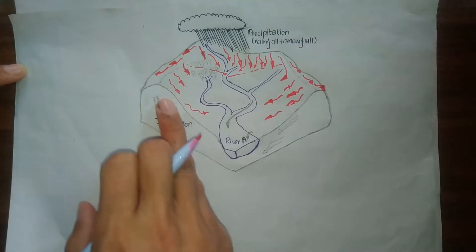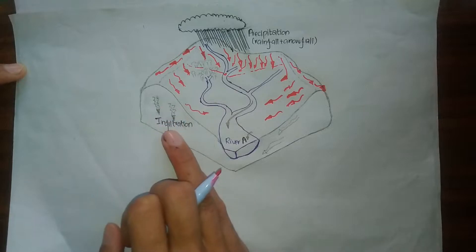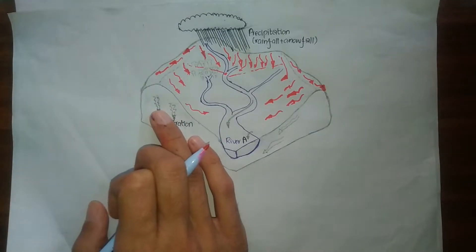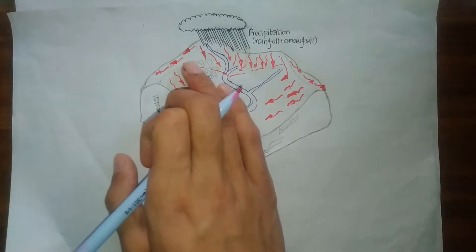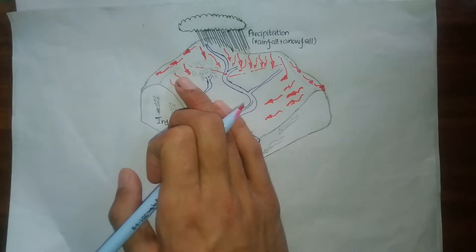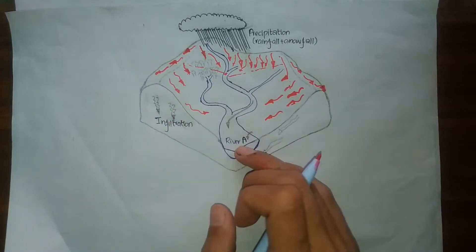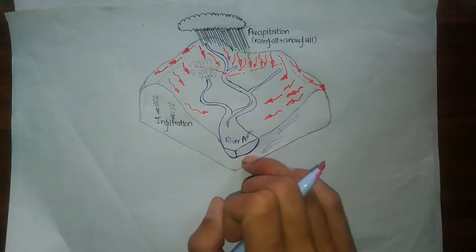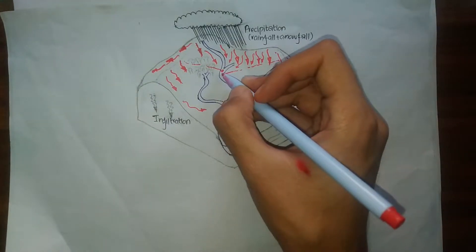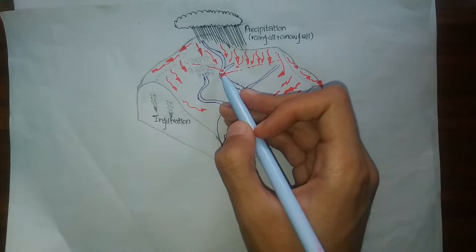Some of the precipitation is percolating into the ground, which is called infiltration. We are not going to talk about that water. All the remaining water becomes surface runoff, flowing over the surface and getting deposited in River A. Now let's take a point on this river — we are going to name this station M.